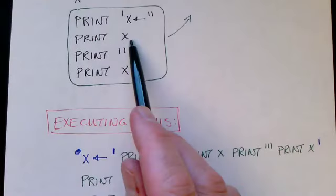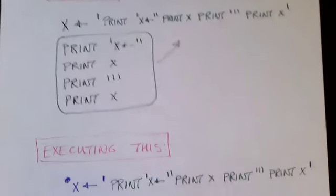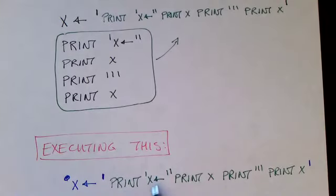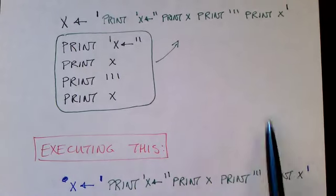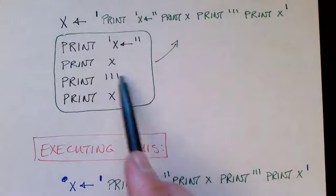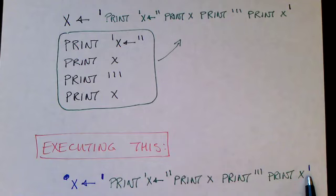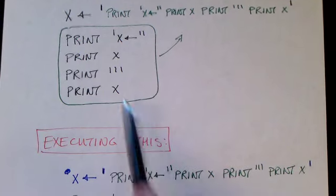And the next thing we do is print x. Well, we know what x is. x is all this stuff here. So, we just print it out right here. And this is exactly the same material as here. So, we print that out. And then in the next line, we print the closing quote. So, you see that here is a closing quote. And finally, we print x.